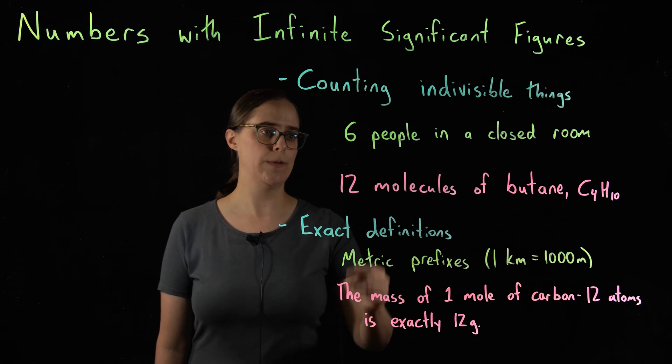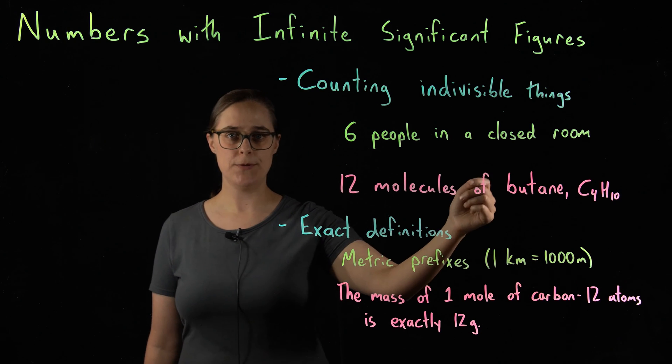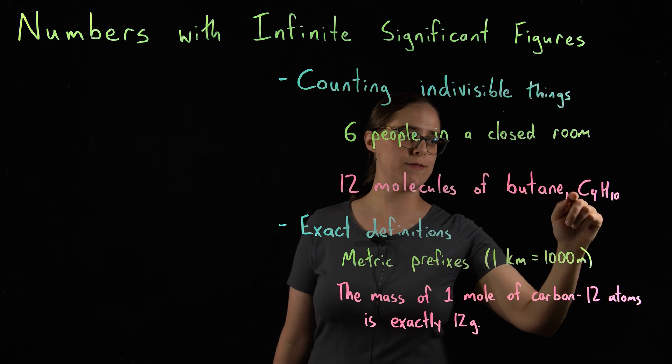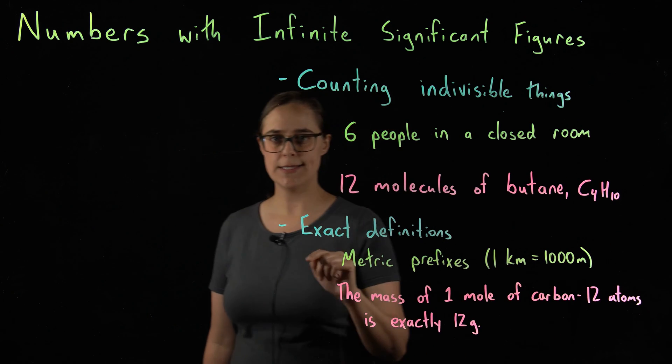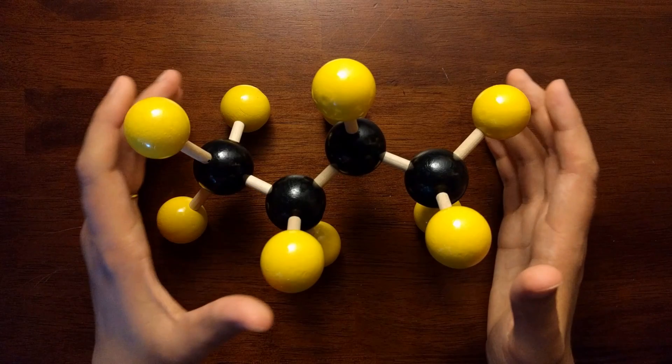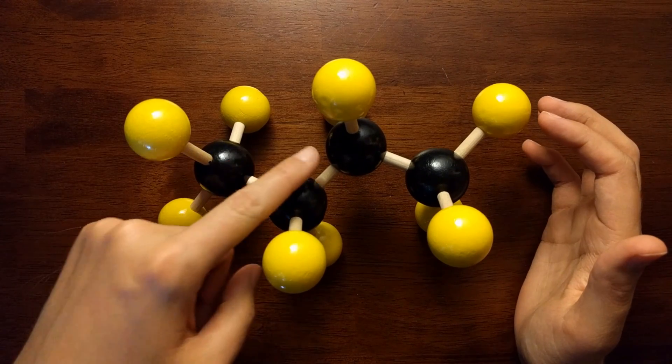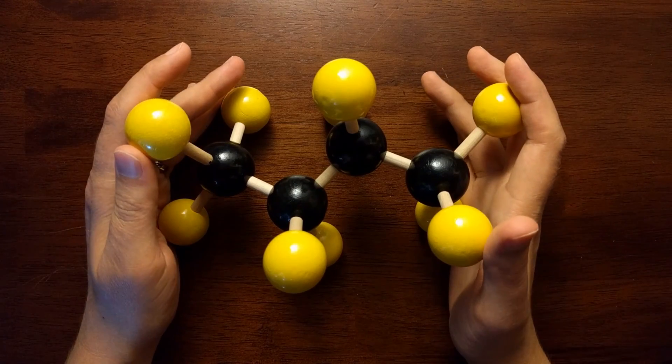Another example, 12 molecules of butane. Butane has a molecular formula of C4H10. Let's look at a molecular model. This model of butane, you can see 4 black carbon atoms and 10 yellow hydrogen atoms.